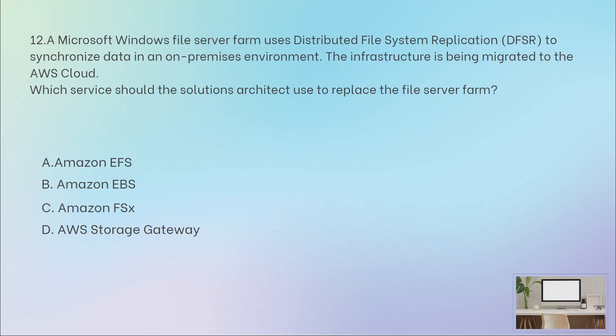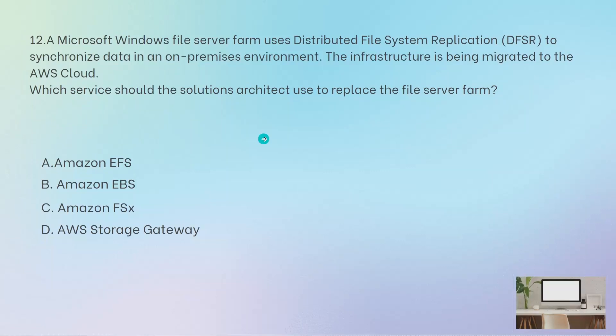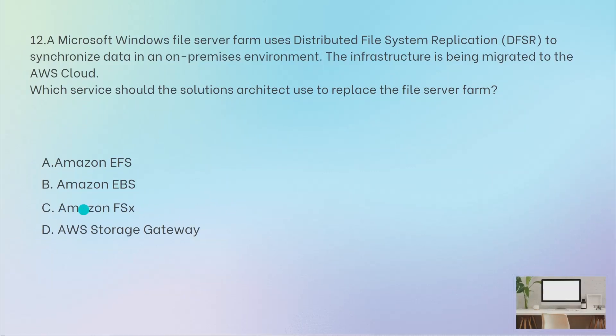EFS cannot be used either because you cannot replace a Windows file server farm with EFS — it uses a completely different protocol. So the correct answer is FSx, because FSx for Windows File Server supports DFS namespaces and DFS replication. This is the best solution for replacing on-premises infrastructure.